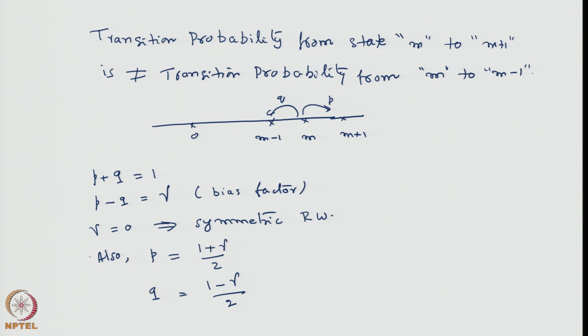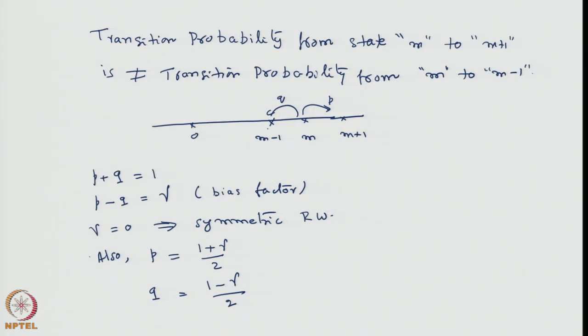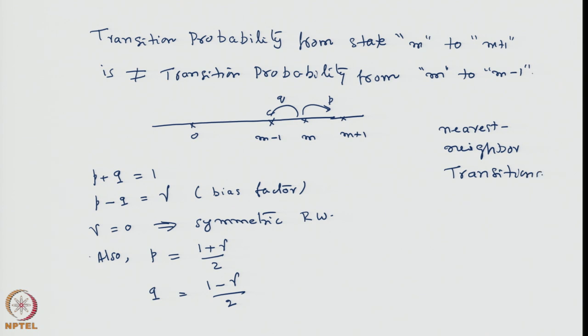By the same arguments put forward in the case of symmetric random walk, the occupancy probability w at site m for the (n+1)th step should have come from transitions from m−1 with factor p, and transition from m+1 with probability q, and from nowhere else, because we continue to use nearest-neighbor transitions only. We can then write down the equation for the occupancy probability as in the earlier case.